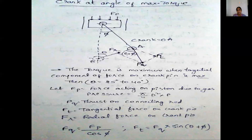The connecting rod, taken as OA, is connected to the crankshaft. The maximum torque is applied from OA. We take F, Ft, and Fq — forces applying on those equations. The torque is maximum when the tangential component of force on crank pin is maximum. Fp is the force acting on the piston due to gas pressure, Fq is the thrust on the connecting rod, Ft is the tangential force on the crank pin, and Fr is the radial force.